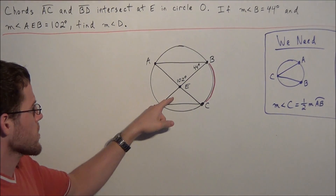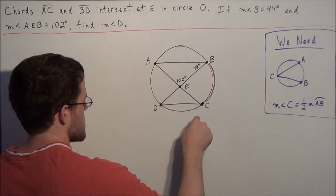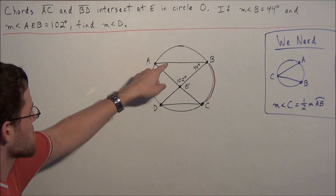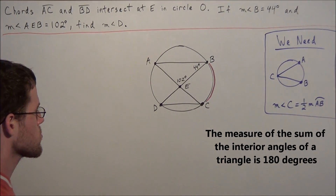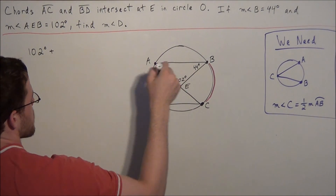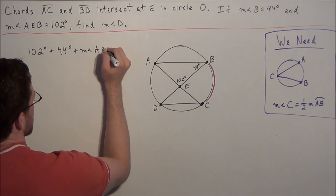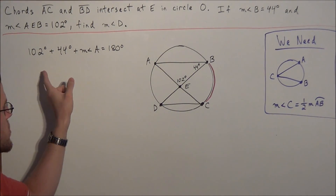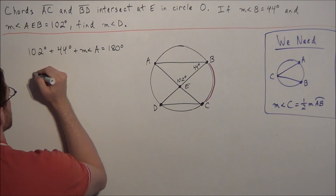Now this will allow us to find the measure of angle D. We notice that angle A also intercepts arc BC — the line segments building angle A contain arc BC. So we want to find the measure of angle A. Recalling that the sum of interior angles of any triangle is 180 degrees, we set up: 102 degrees plus 44 degrees plus the measure of angle A equals 180 degrees, targeting triangle AEB.